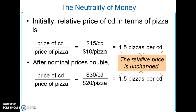The classical dichotomy leads to the neutrality of money. It's really how you should look at the world in the long run: once you have enough time for prices to adjust, there is no impact on any real variables in your economy from printing money.